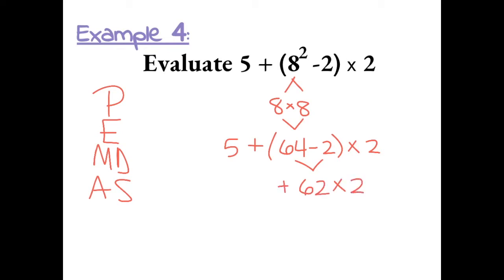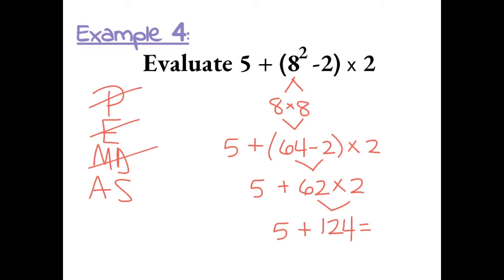Now that we've completely simplified the parentheses, we don't need to bring them down anymore. We don't have any exponents, so next we do multiplication or division: 62 times 2 gives us 124. Now that we've finished multiplication and division, we can add: 5 plus 124 gives us 129.